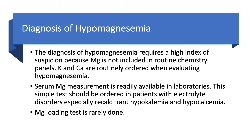How do we diagnose hypomagnesemia? We check serum magnesium, but we need to have a high index of suspicion. Magnesium is usually not included in regular chemistry panels — when you order a basic metabolic panel, you don't get magnesium; you have to order it separately. Any patient with recalcitrant hypokalemia and hypocalcemia should get their magnesium checked, because this could be the reason for the recalcitrance. The magnesium loading test is rarely done, so you don't need to worry about it.